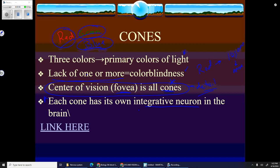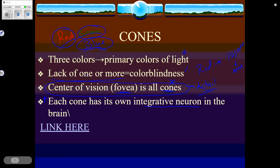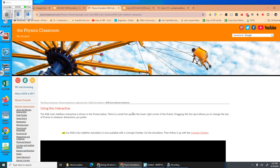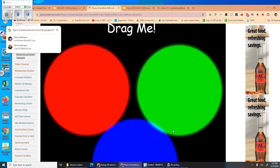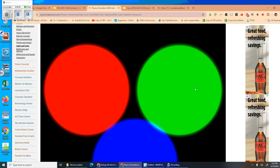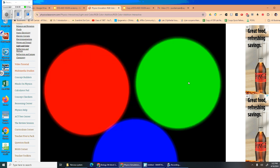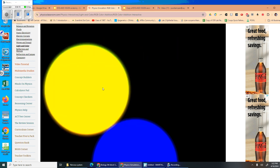This is a fun link I wanted to show you. This interactive shows you how you can take the primary colors of light and make them into basically any color. If I take the green and the red and overlap them, I get yellow.